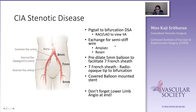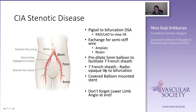I then exchange for a semi-stiff wire — either an Amplatz or a Rosen wire — for any ballooning or stenting. Before introducing a stent, I always pre-dilate if it's a tight stenosis or an occlusion, before introducing a 7 French sheath. If you're using a covered or uncovered balloon-mounted stent, don't bear that stent back through the lesion — use that 7 French sheath as a way of protecting the balloon.